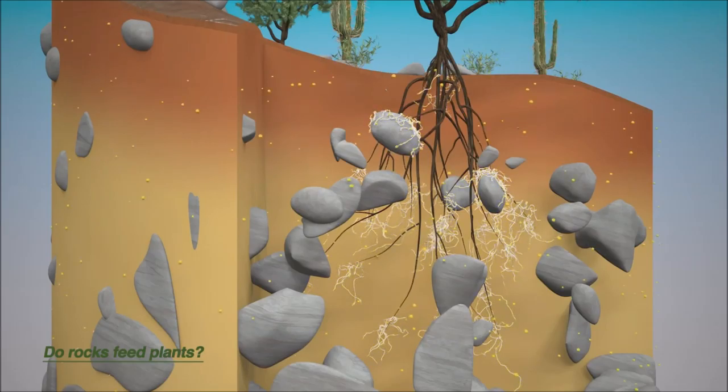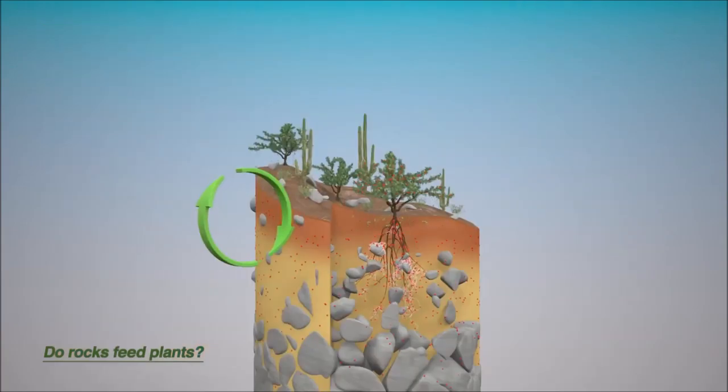The entire nutrient cycle is slower and nutrient fluxes are lower. This ecosystem is acquiring because it draws its mineral nutrients mainly from the rock.